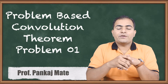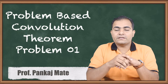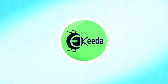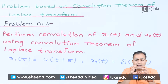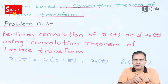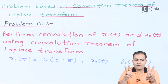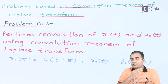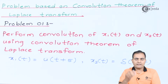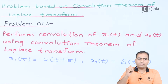Before solving any problem based on convolution theorem, you should know the property which was derived in the Laplace transform section. The Laplace transform of the convolution of any two functions is always the product of the Laplace transforms of the two individual functions. Whenever you want to transform the convolution, take the Laplace transform of both functions separately and just multiply them to get the resultant in the Laplace domain.